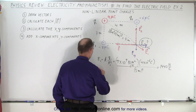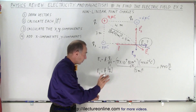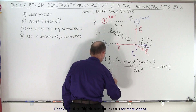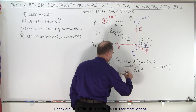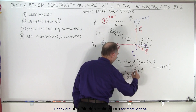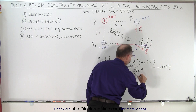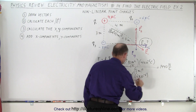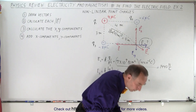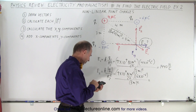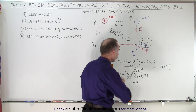We do the same for the other two charges. The magnitude of E2 = K|Q2| / r2². We put absolute value signs around Q2 since we don't care about the negative sign. That's 9 × 10⁹ N·m²/C² times 6 × 10⁻⁶ C, divided by 3 meters squared. So 9×10⁹ × 6×10⁻⁶ / 9 = 6,000 N/C.